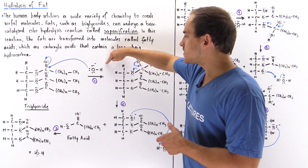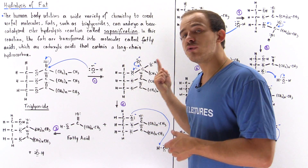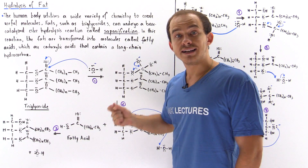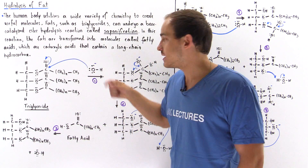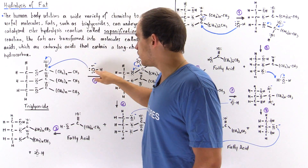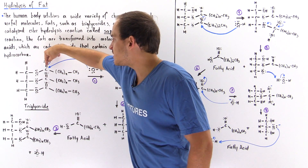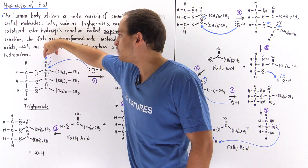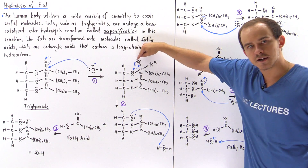In the first step, we take the base, which reacts as a nucleophile. It attacks the carbon-oxygen double bond, creating a bond between this oxygen and this carbon, and in the process displaces the pi bond, placing it onto this oxygen here.